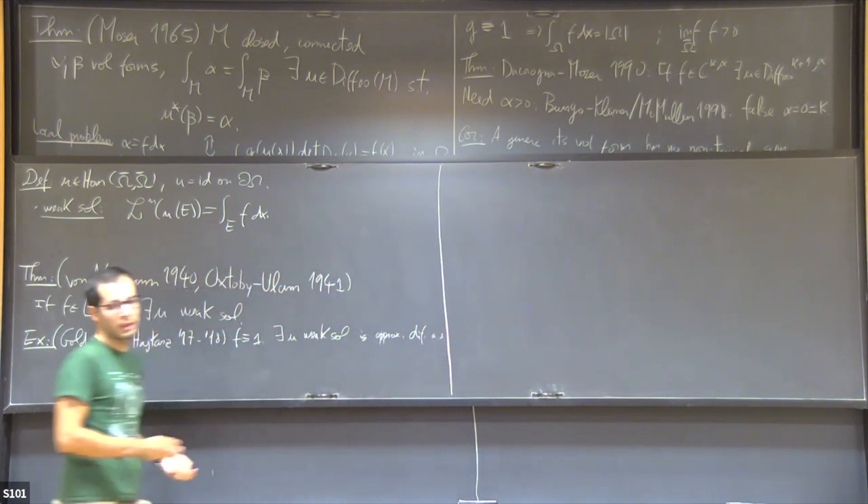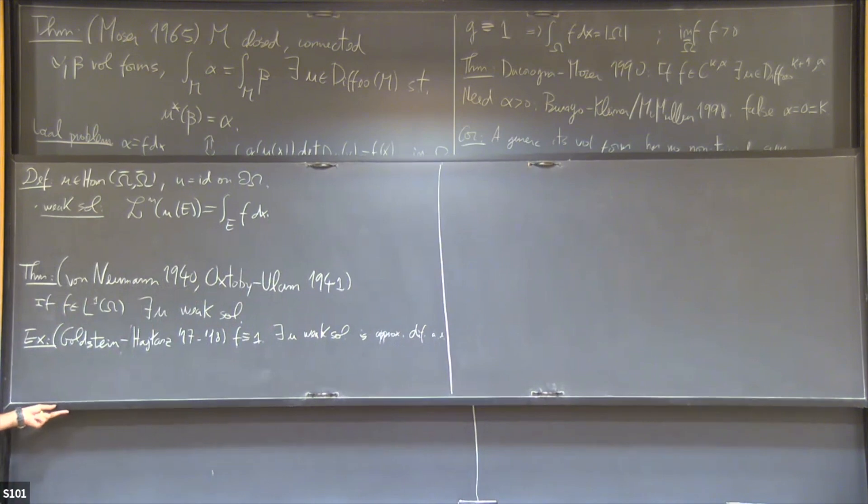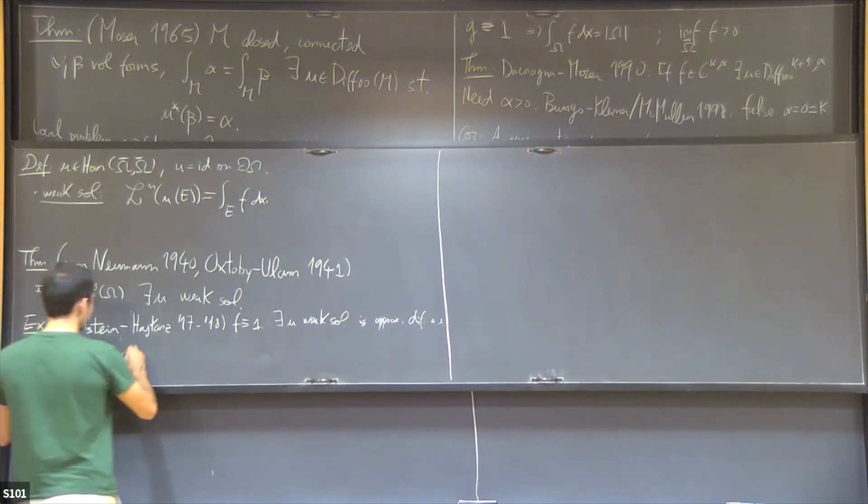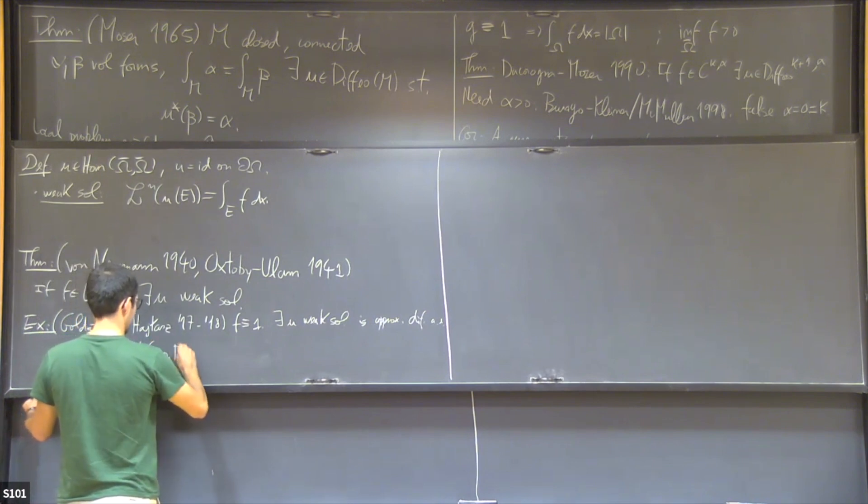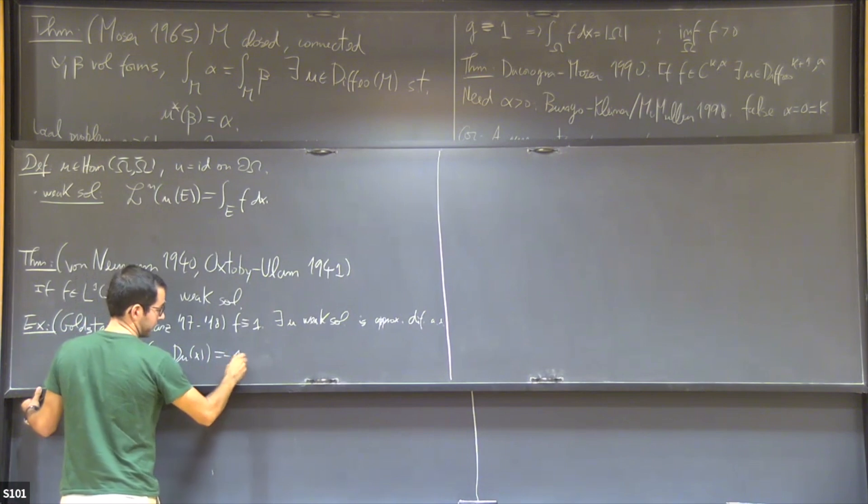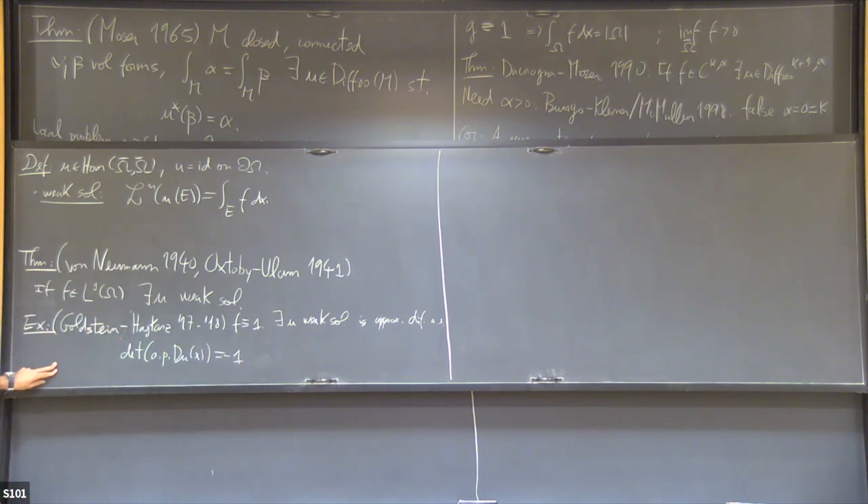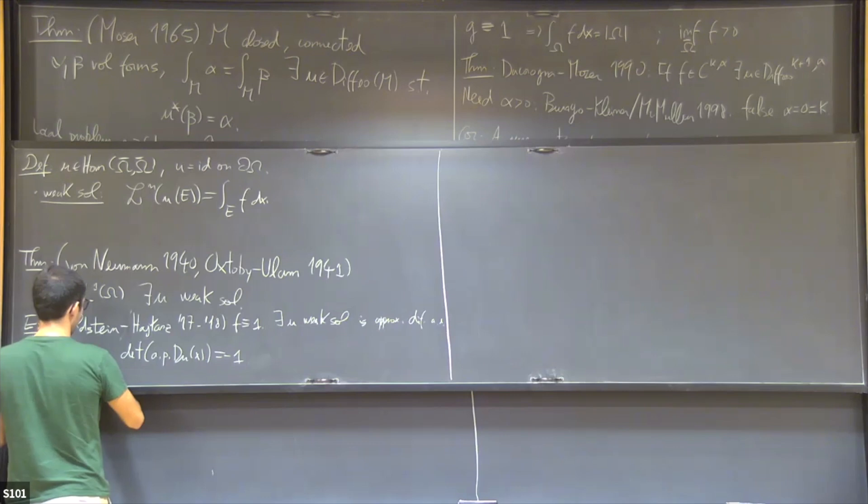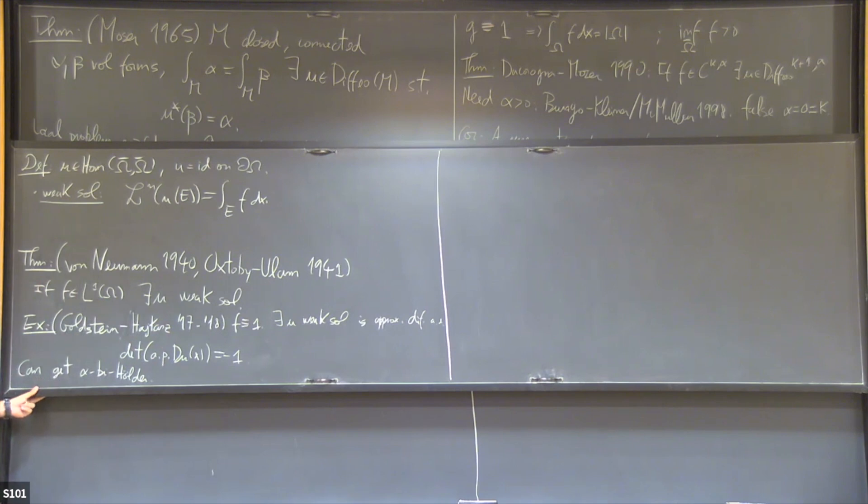What they showed is that there is a weak solution U which is approximately differentiable almost everywhere. I will not say what this means, but you can think that it's some kind of measure theoretic notion of differentiability. And if you look at the approximate differential and you compute the Jacobian, it equals minus one. For these maps, the topological notion of orientability and the analytical notion of orientability are different, even when f is one.